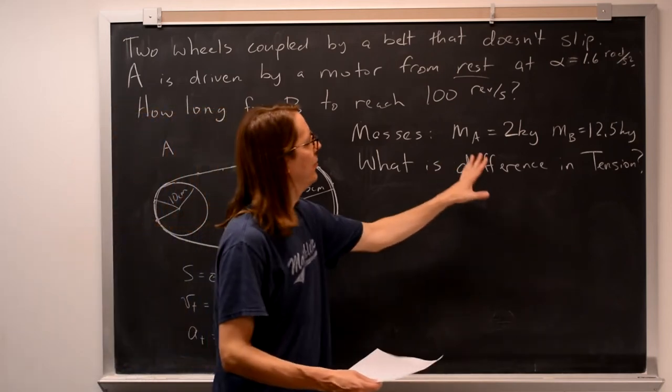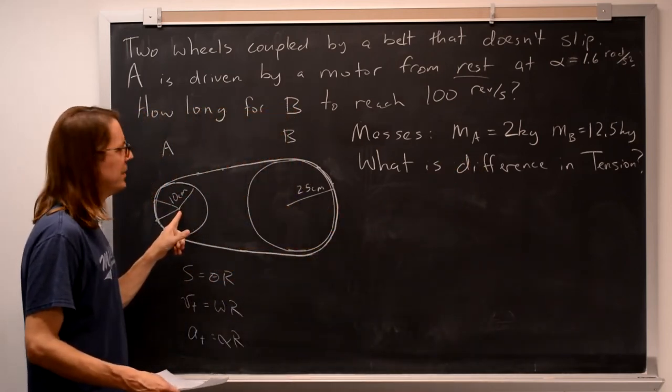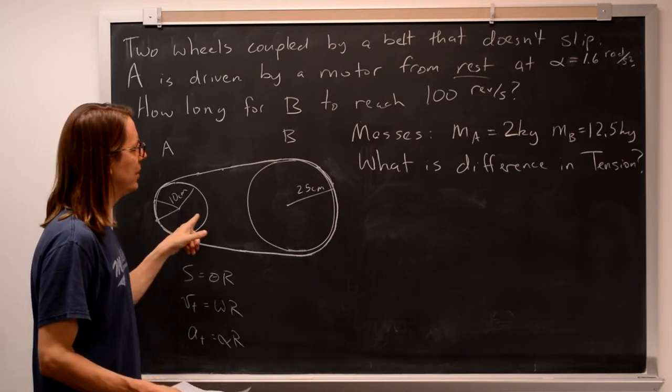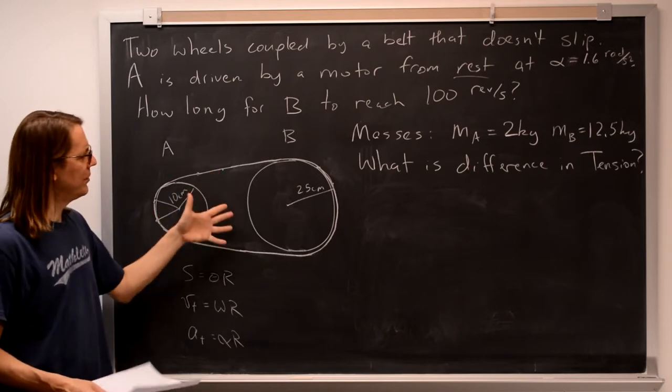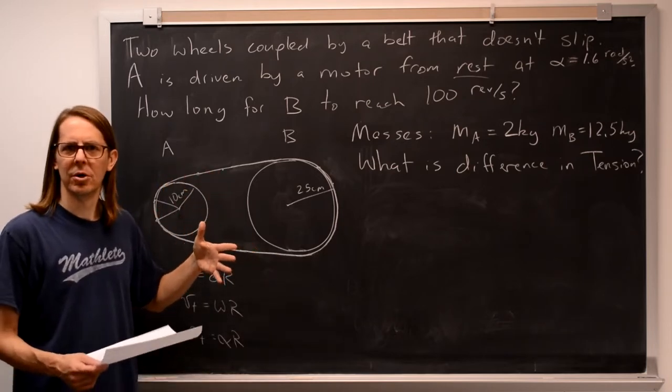Now we're given the masses of the two wheels. So this one is 2 kilograms, and this one is 12.5 kilograms. And we're asked, what's the difference in the tension? What does that even mean?